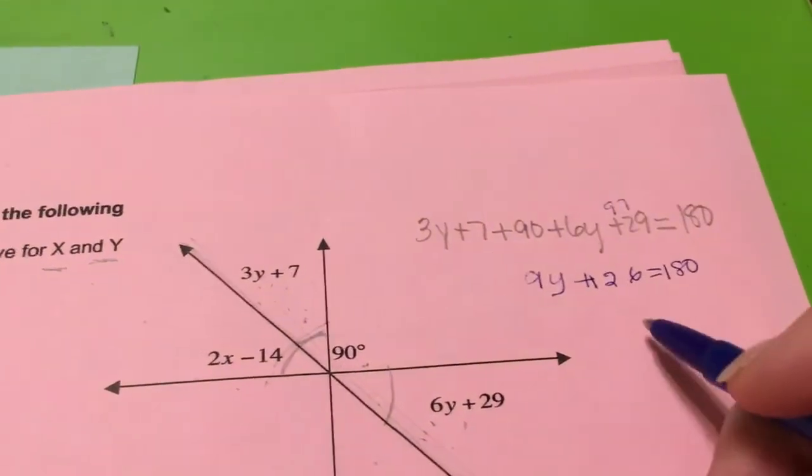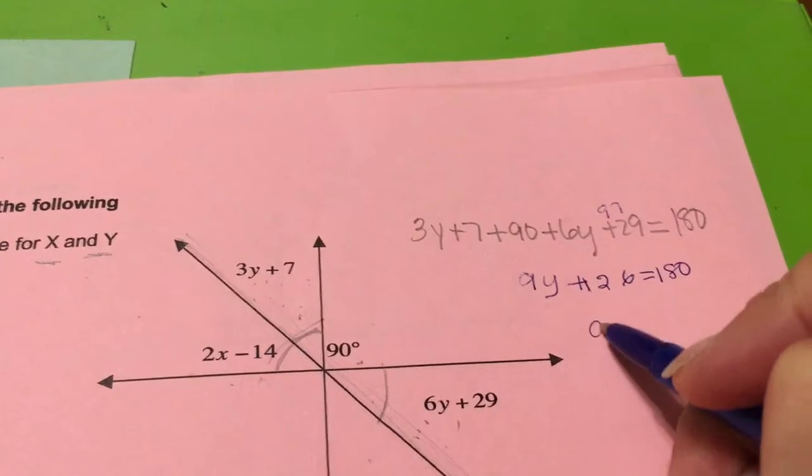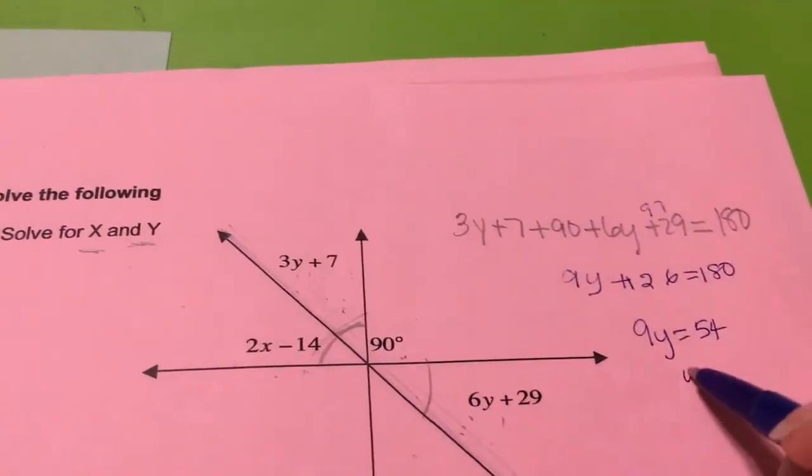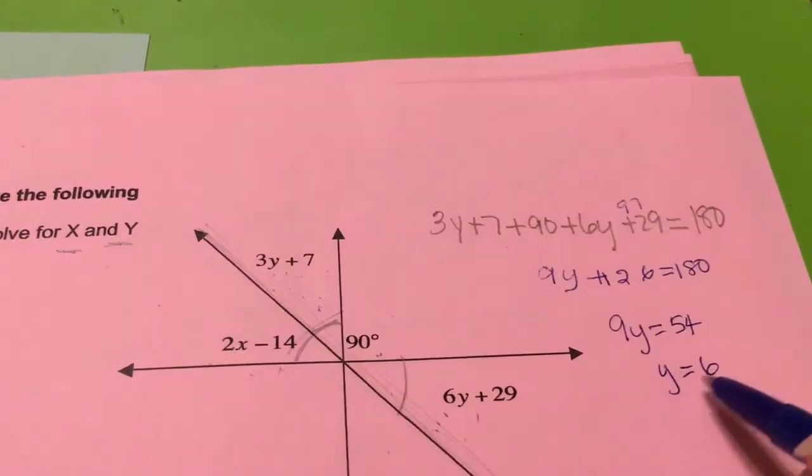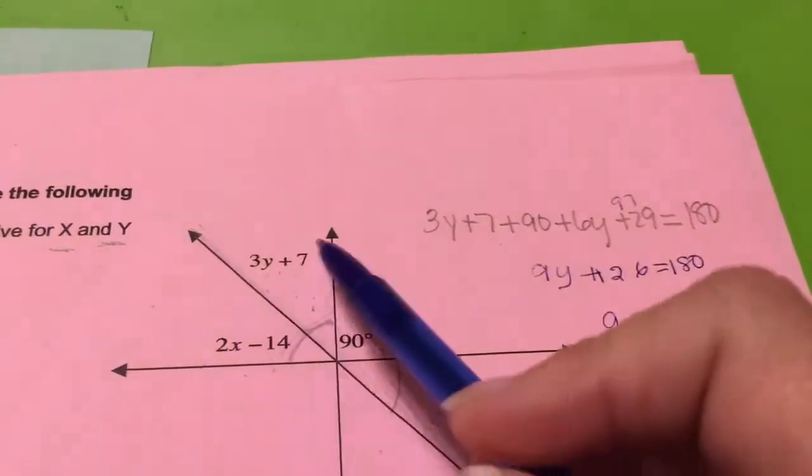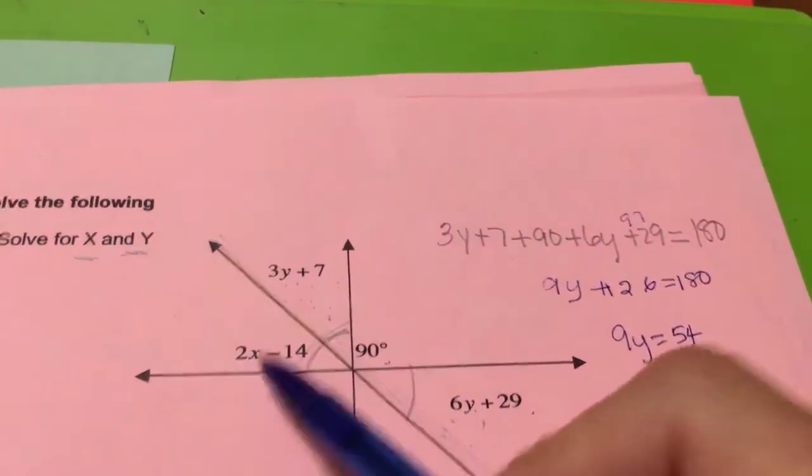Okay, so this is going to be 9y equals 54 and y equals 6. Now plug in 6 here. I'm sorry, plug in 6 here and you're still going to proceed the same way I said before.